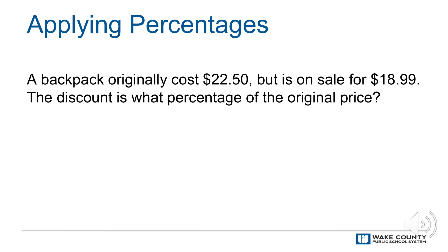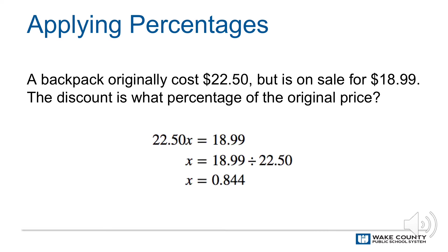Students will be able to find percentage. For example, a backpack originally cost $22.50 but is on sale for $18.99. The discount is what percent of the original price? The sale price is 84.4% of the original price. The discount is $100 minus $84.40, or 15.6% of the original price.